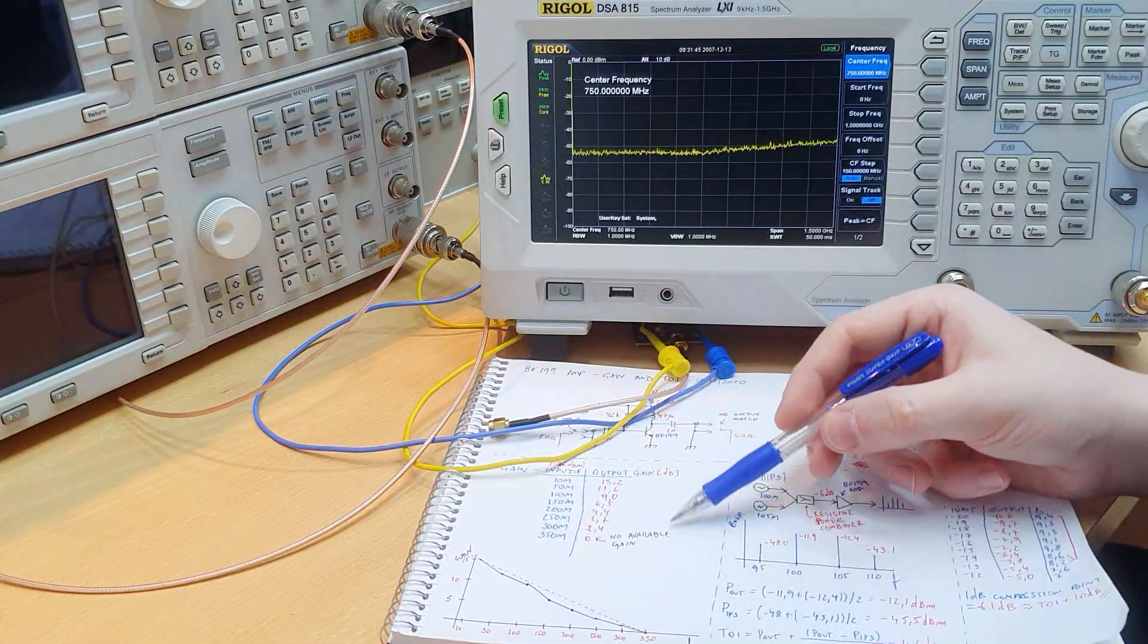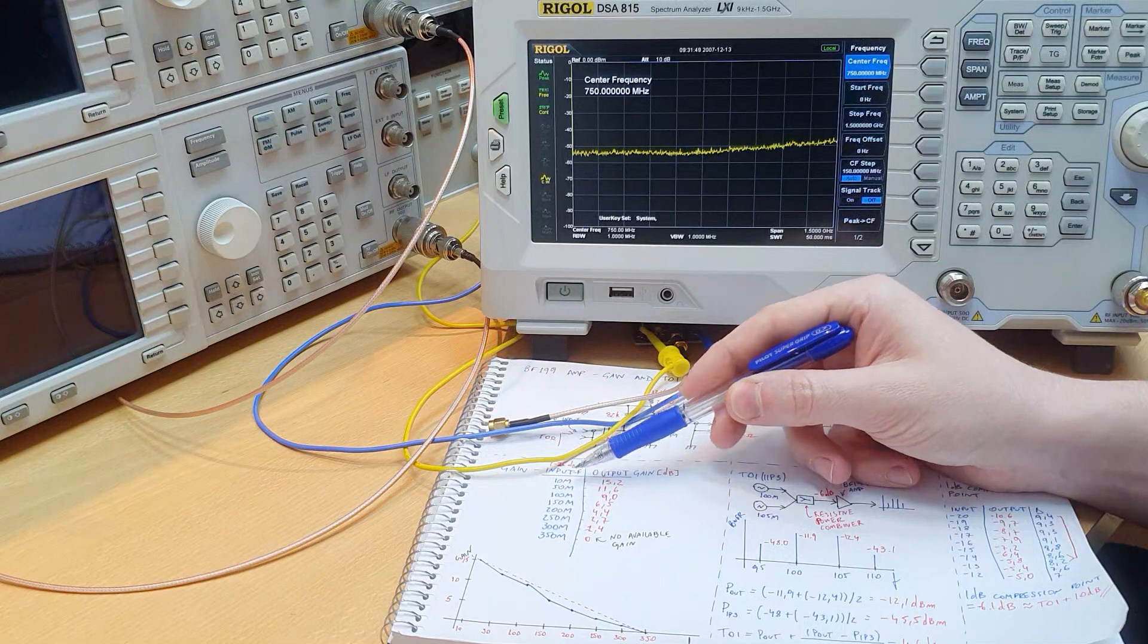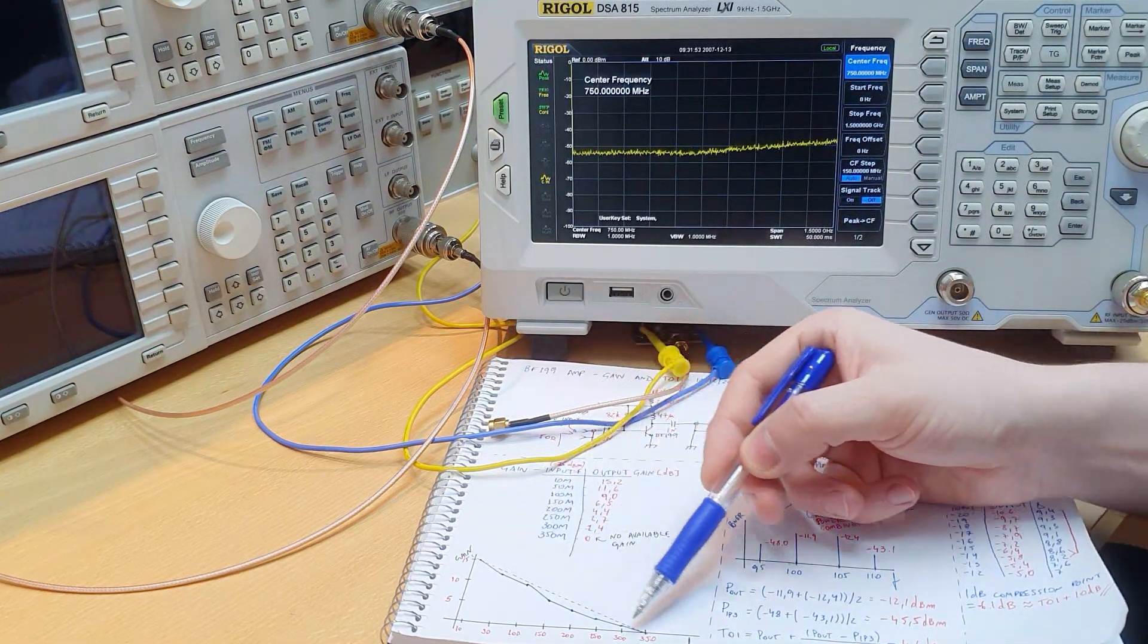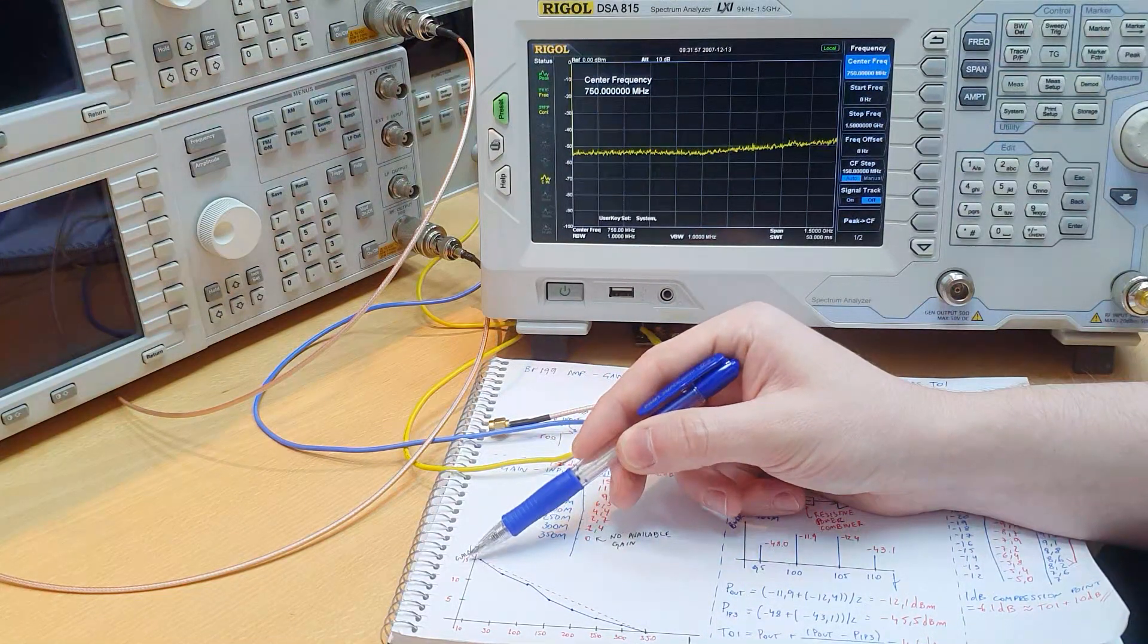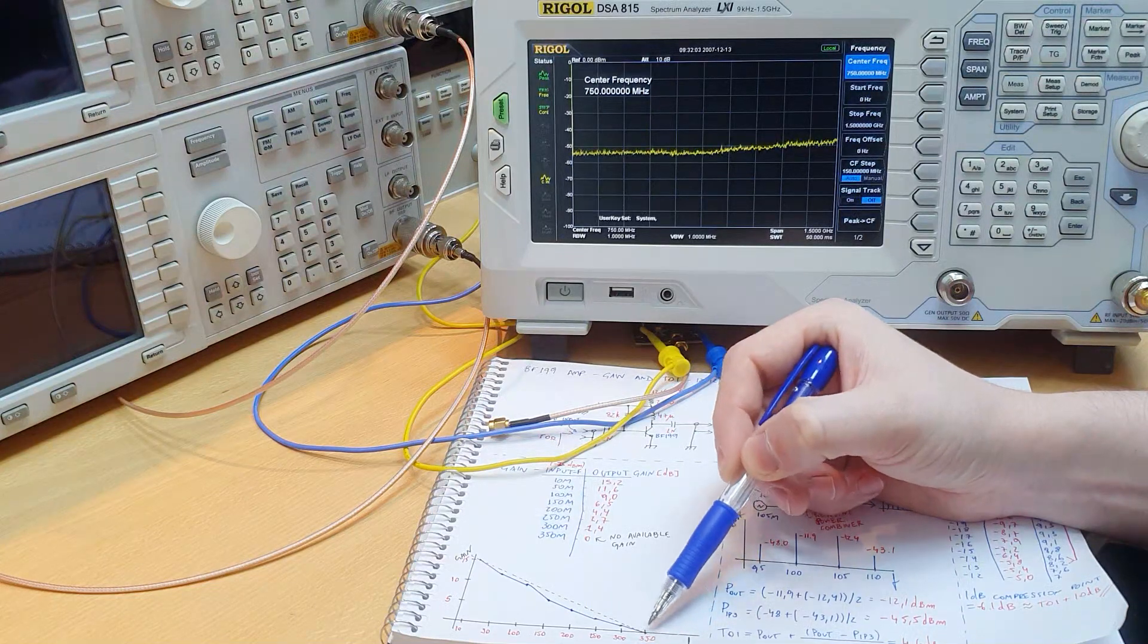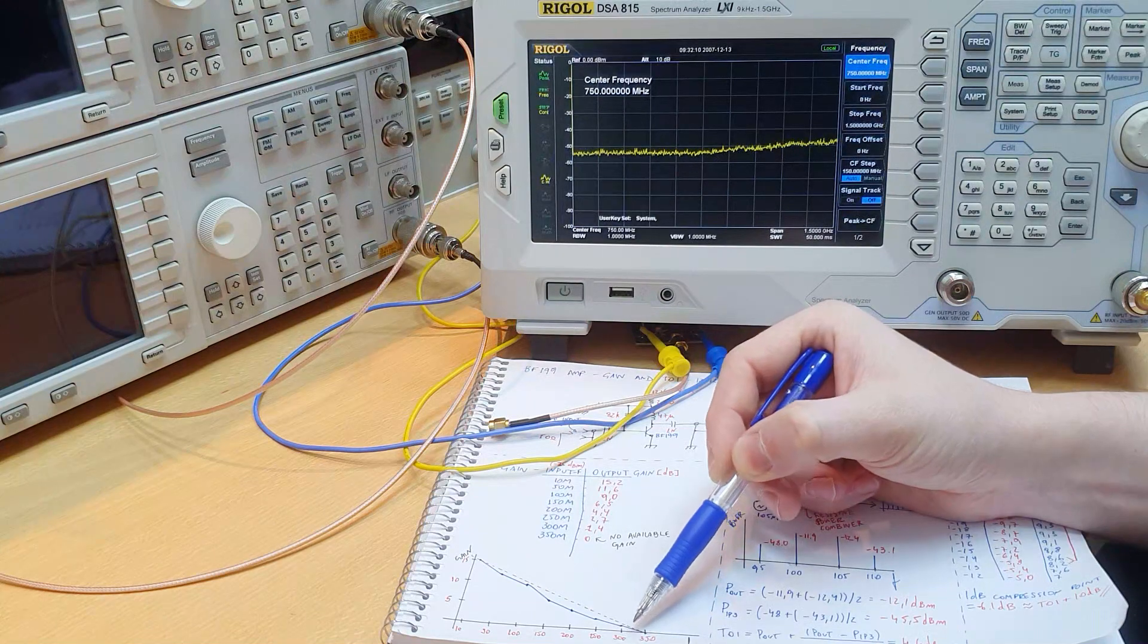Here we can see that I sweep the frequency at the input of the amplifier from 10 meg to 350 meg, and I plotted the gain over frequency. Here we have gain in dB from 15 dB to 0 dB. And we can see here at 350 meg the transition to 0 dB where the amplifier does not present gain anymore.